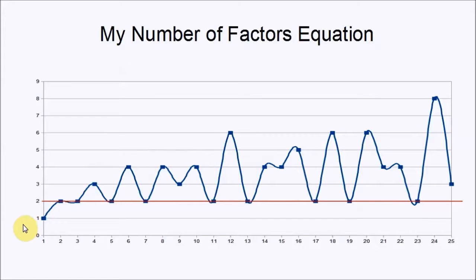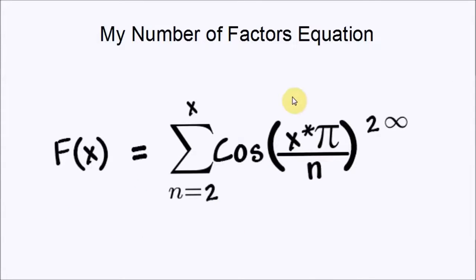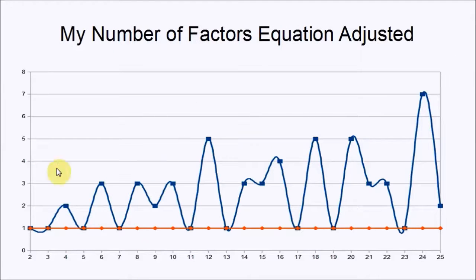I could do this by adjusting my original equation a little bit. My original equation sums all the numbers from 1 to x, counting all the factors. If I adjust my equation to start at 2 and get rid of 1 as a factor, it actually adjusts the graph nicely. This is the same graph as before, but because I'm not taking into account 1 as a factor, all the prime numbers actually return 1 now. So for 2 you get 1, for 3 again 1, and so on for all the prime numbers.